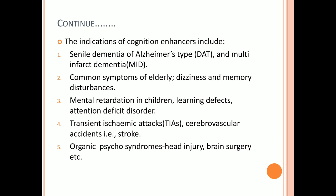The second indication is common symptoms of the elderly. Dementia is related to elderly patients but can also affect children. It can cause dizziness and memory disturbance. The third indication is mental irritation in children — some children have learning defects, attention deficit disorder, or mental retardation.